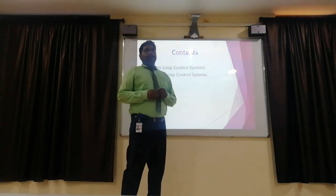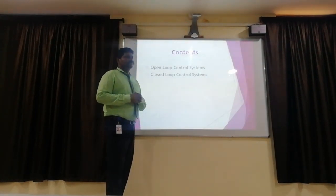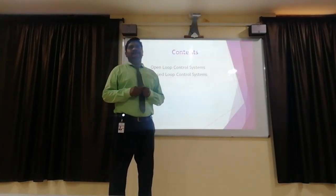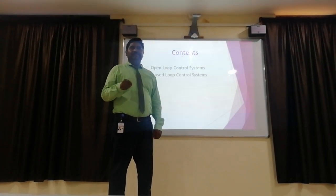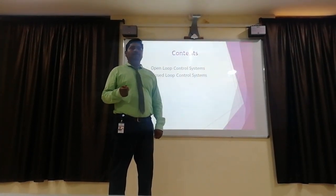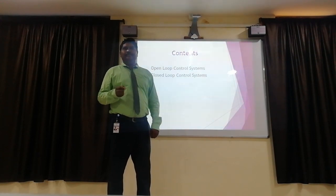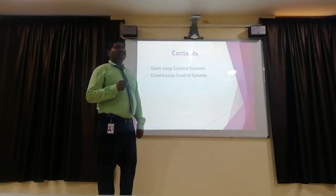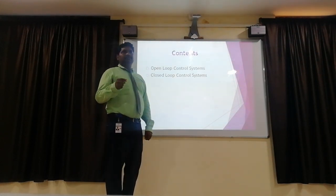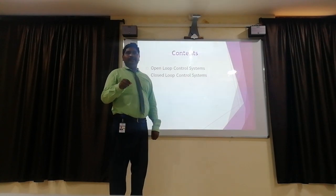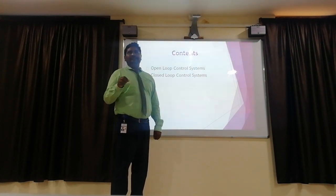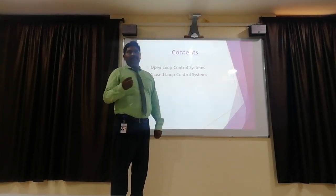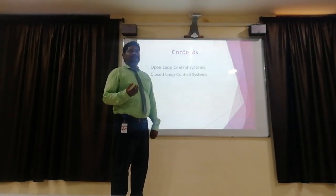What is a control system? A control system is a system that gives the input command over the output. The best example we can find in our home is a water tap. The tap opening and closing is called the input command, and the flow of water coming out is called the output. That is called a control system.